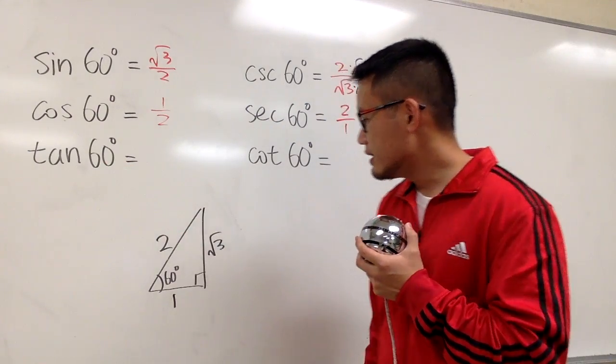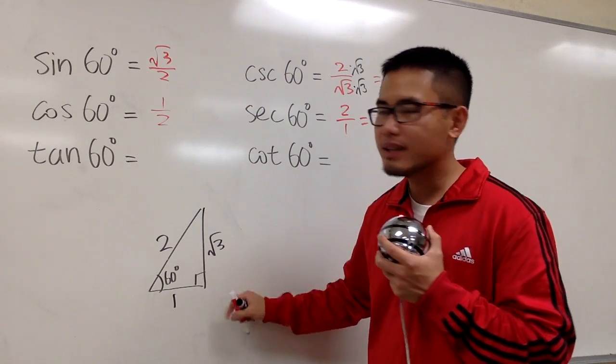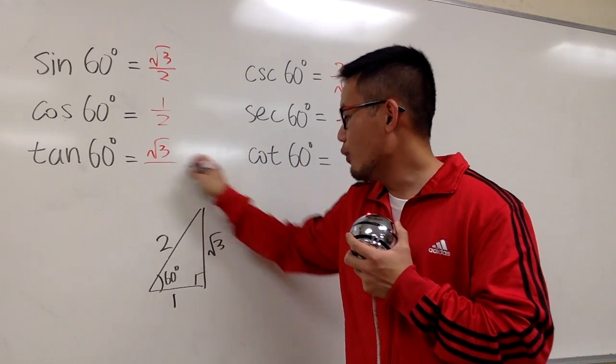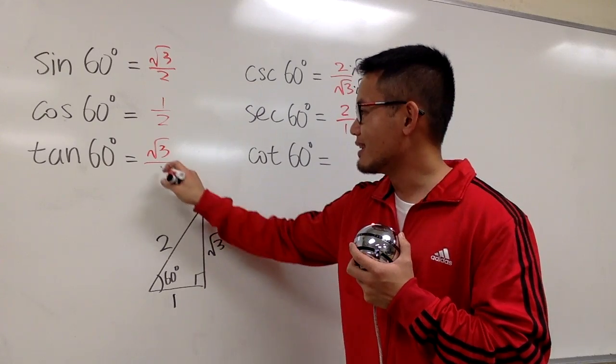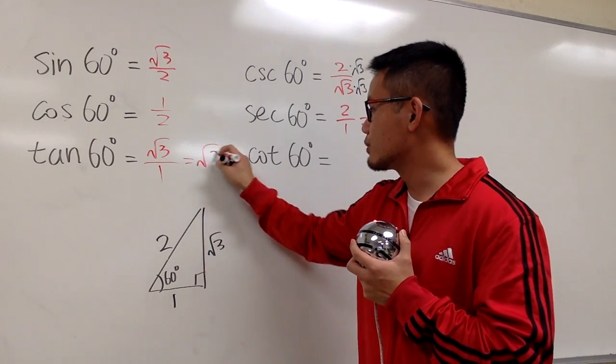And we have tangent of 60 degrees, it's the opposite, which is square root of 3, over the adjacent, which is 1. So, square root of 3 over 1 is just square root of 3.